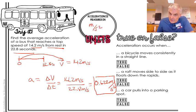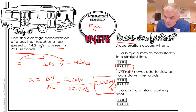So true or false? Simple questions. Acceleration occurs when a bicycle moves consistently in a straight line. False. Why is that false? Because there's no change in velocity. Because it consistently means constant velocity. And there's no change in direction. A raft moves from side to side as it floats down the rapids. True. Ding, ding, ding. True. This one's true. Why?